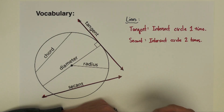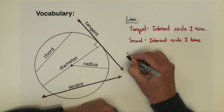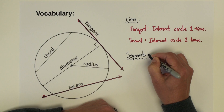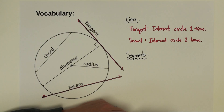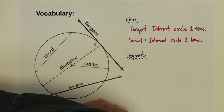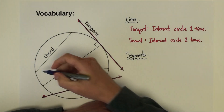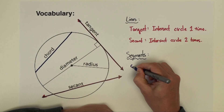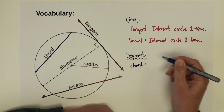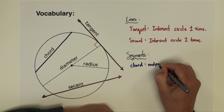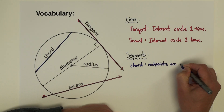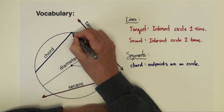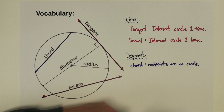Now we also have some segments on the interior of this circle. I would imagine these segments are vocabulary terms that you are already familiar with, but let's go ahead and talk about those. The first one I want to start with over here on the left side is a chord. A chord is a segment whose endpoints are on the circle. You can see both endpoints of the chord right there on the circle.